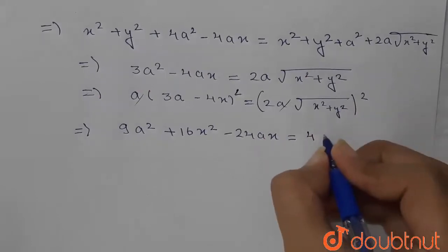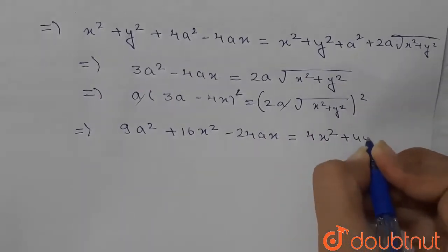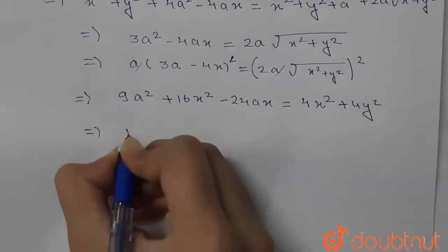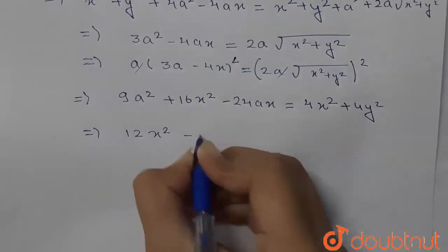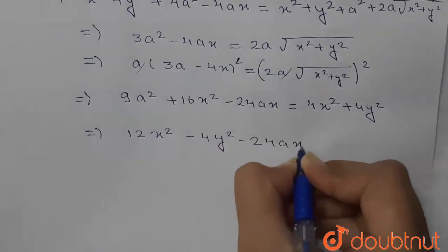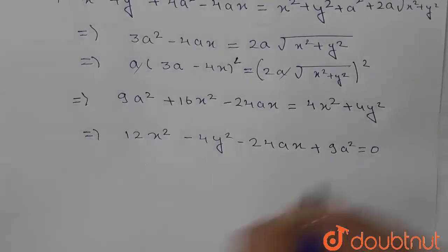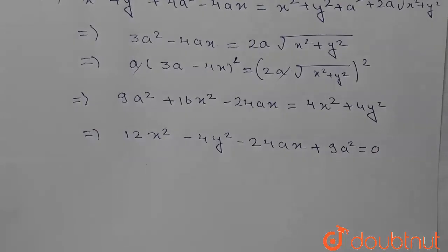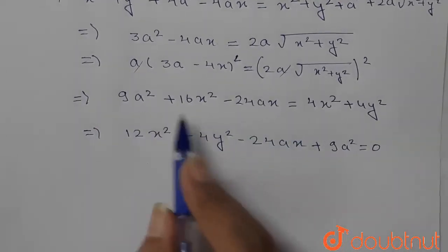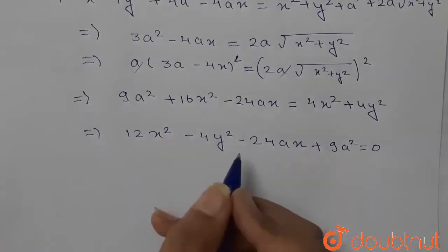Expanding the right-hand side gives 4x² + 4y². On solving, we get 12x² − 4y² − 24ax + 9a² = 0. This is the locus for the centers of the circle which touches x² + y² = a² and x² + y² = 4ax externally. This is the required answer.